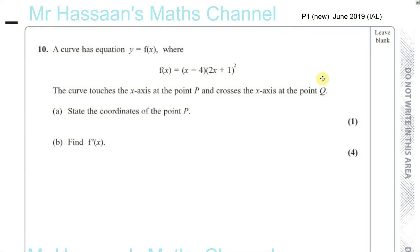Question number 10 from June 2019, the last question in this paper. We have a curve y equals f of x, where f of x is equal to x minus 4 times 2x plus 1 squared. The curve touches the x-axis at the point P and crosses the x-axis at the point Q. State the coordinates of the point P.